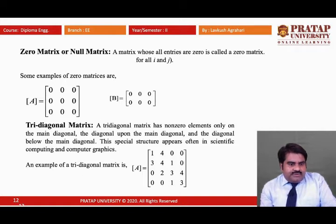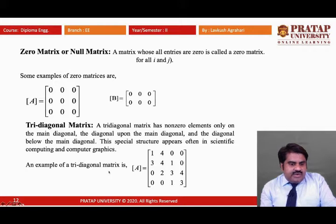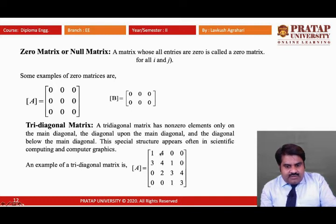Now, the tridiagonal matrix. A tridiagonal matrix has non-zero elements only on the main diagonal, the diagonal above the main diagonal, and the diagonal below the main diagonal. This special structure appears often in scientific computing and computer graphics. In the example, the principal diagonal elements are 1, 4, 3, 3; the super-diagonal elements are 4, 1, 4; the sub-diagonal elements are 3, 2, 1; and all other elements are zero.